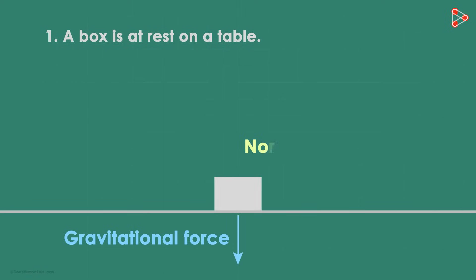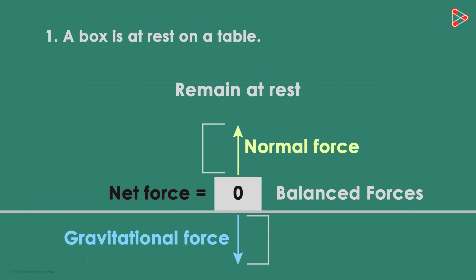And then there is a normal force acting upwards. As the forces are equal and opposite, the box does not move at all. It continues to remain at rest. And also notice that the size of the arrows is the same. The forces are balanced and the net force is zero.